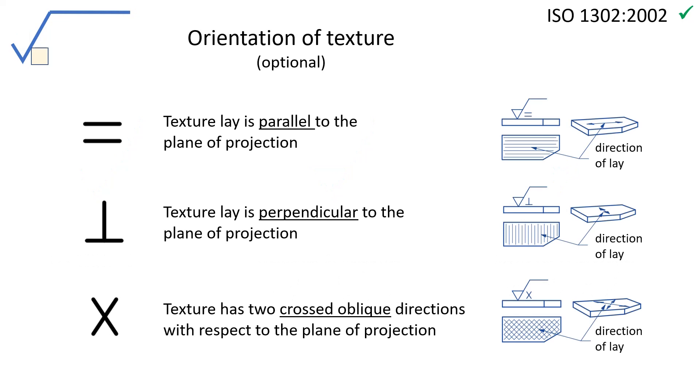The most common are either parallel or perpendicular to the projection plane of the drawing. Other symbols are also possible, such as M for multi-directional, C for circular, R for radial, and P for particular.